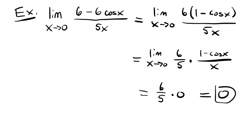Remember, the reason why we can go from this step to this step is because the limit of two functions being multiplied together is equal to their limits multiplied together. So the limit as x approaches 0 of 6 fifths is 6 fifths, and the limit as x approaches 0 of 1 minus cosine x over x is 0. So we can multiply their limits together to get this answer.